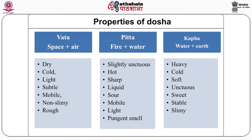The properties of vata dosa are: dry, cold, light, subtle, mobile, non-slimy and rough. Pitta dosa is slightly unctuous, hot, sharp, liquid, sour, mobile, light and pungent, with a pungent smell. The kapha dosa is heavy, cold, soft, unctuous, sweet, stable and slimy in nature.